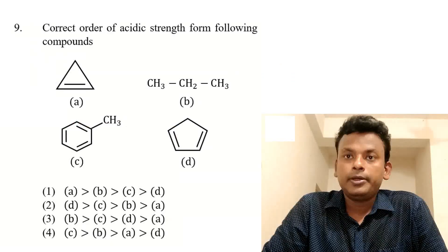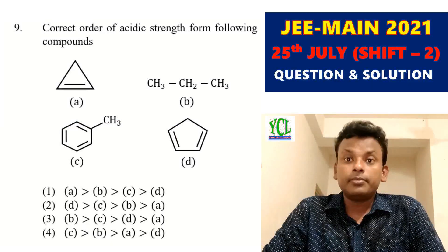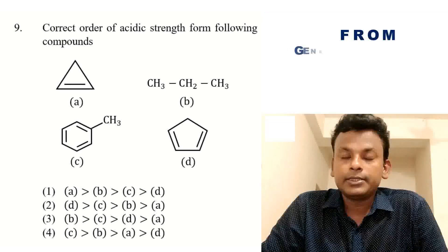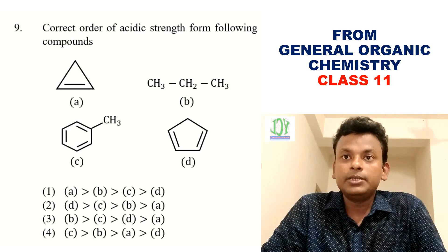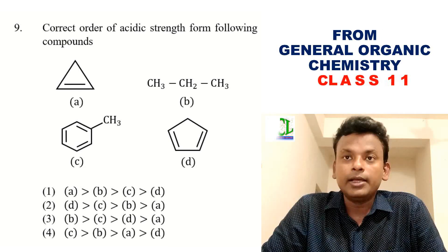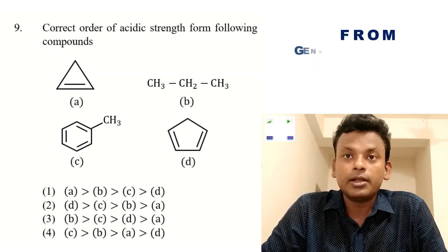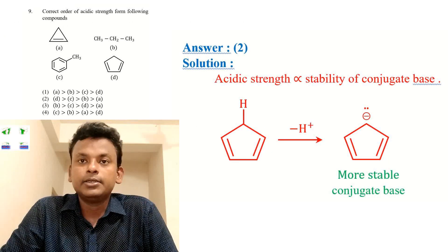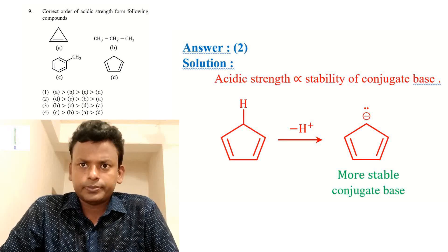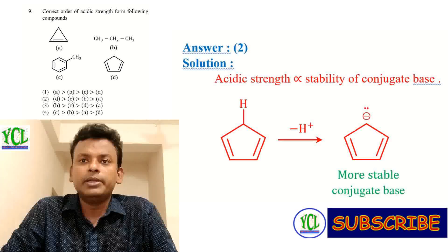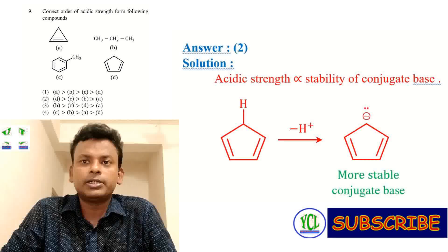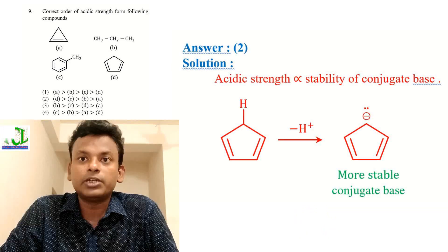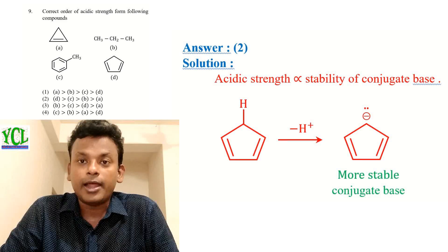Question 9: Correct order of acidic strength among compounds A, B, C, and D — options are given. The answer is option 2. Acidic strength is directly proportional to the stability of the conjugate base. The more stable the conjugate base, the more acidic the compound. So option 2 is correct.